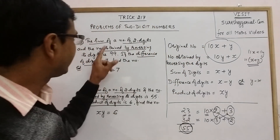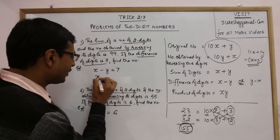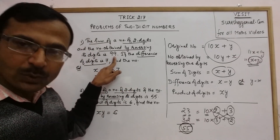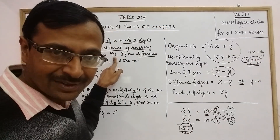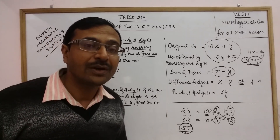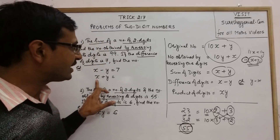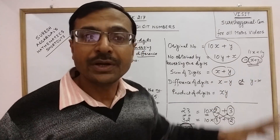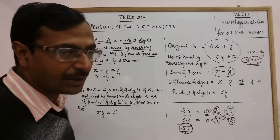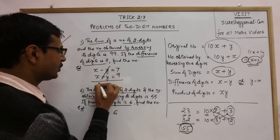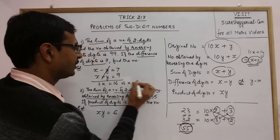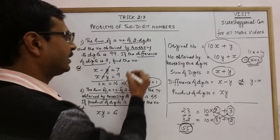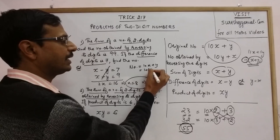So when the sum of the number and its reverse is given, just divide it by 11 to get x plus y, the sum of the digits. For the first problem, 99 divided by 11 gives x plus y equals 9. Combined with x minus y equals 7, solving these two equations gives x equals 8 and y equals 1. So the number is 10x plus y, that is 10 into 8 plus 1, which equals 81.